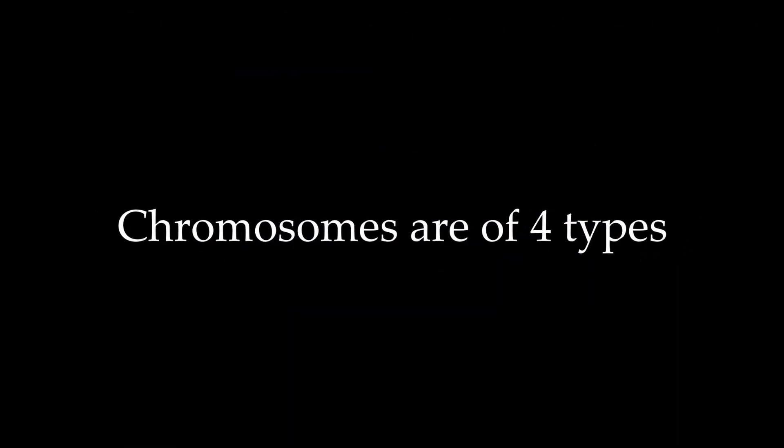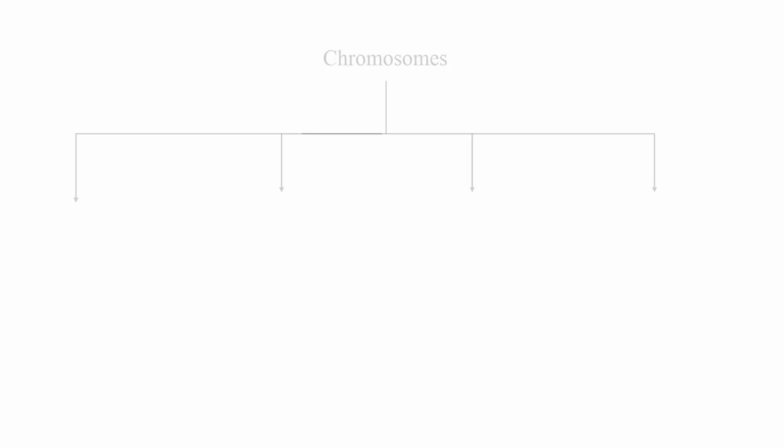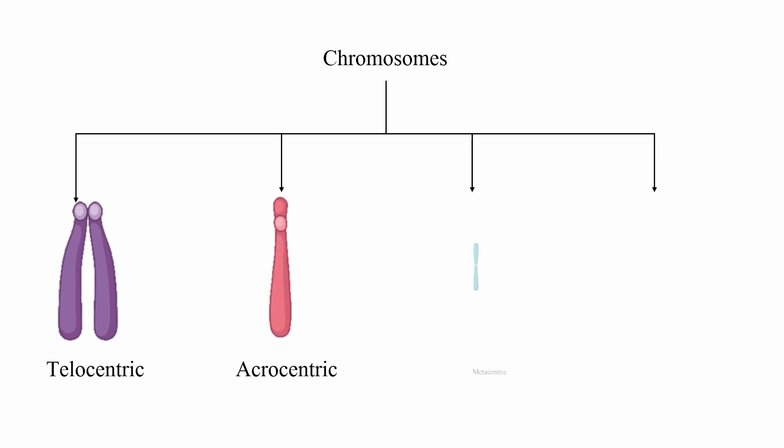In our previous video, we learned that chromosomes are of four types: telocentric, acrocentric, metacentric and submetacentric.